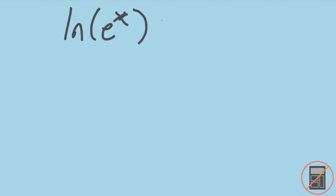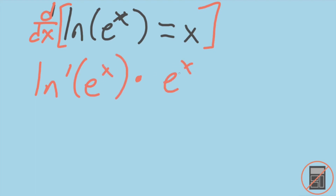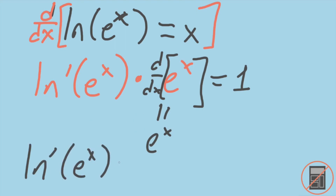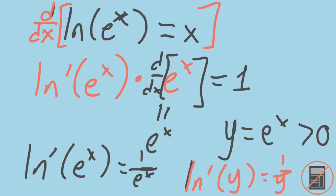Let's prove that the derivative of the natural log of x is 1 over x. If we look at the equation natural log of e to the x, since they are inverses, this equals x. Taking the derivative of this equation using the chain rule, we get that the derivative of the natural log function evaluated at e to the x, times the derivative of e to the x, equals 1. Since we're supposing e to the x is its own derivative, this simplifies to give us that the derivative of natural log of e to the x equals 1 over e to the x. Letting y equal e to the x, which can be any positive number, we get that the derivative of the natural log of y equals 1 over y.